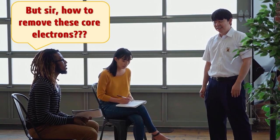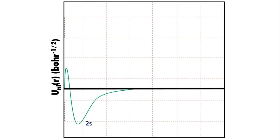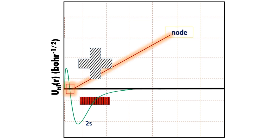For a start, see carefully. Near the nucleus, the 2s state changes sign, that is, it exhibits a node in the region where the 1s state is localized.